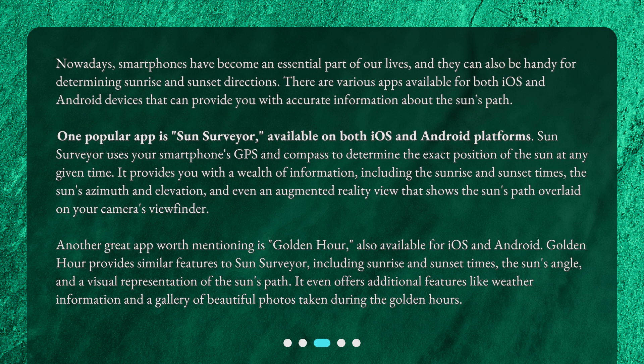One popular app is Sun Surveyor, available on both iOS and Android platforms. Sun Surveyor uses your smartphone's GPS and compass to determine the exact position of the sun at any given time. It provides you with a wealth of information including the sunrise and sunset times, the sun's azimuth and elevation.